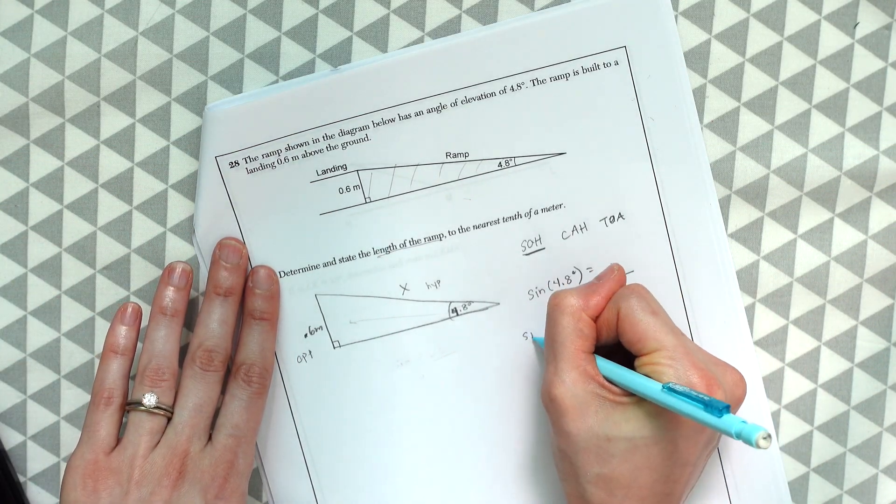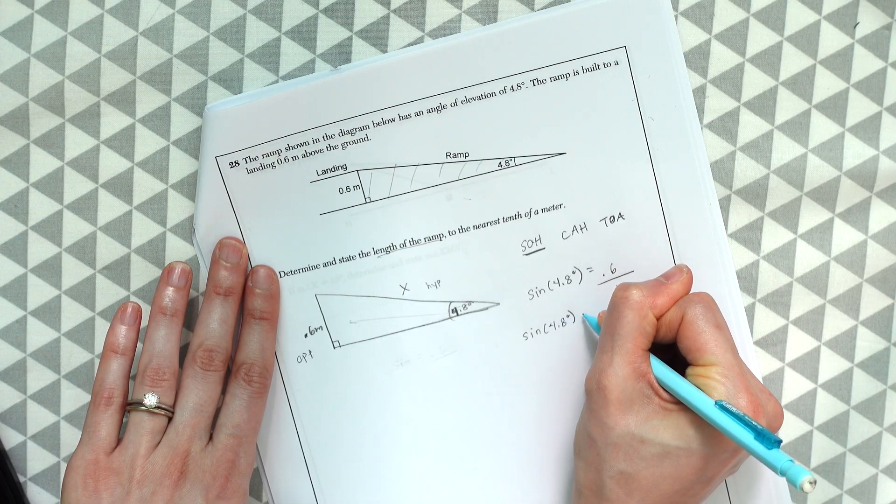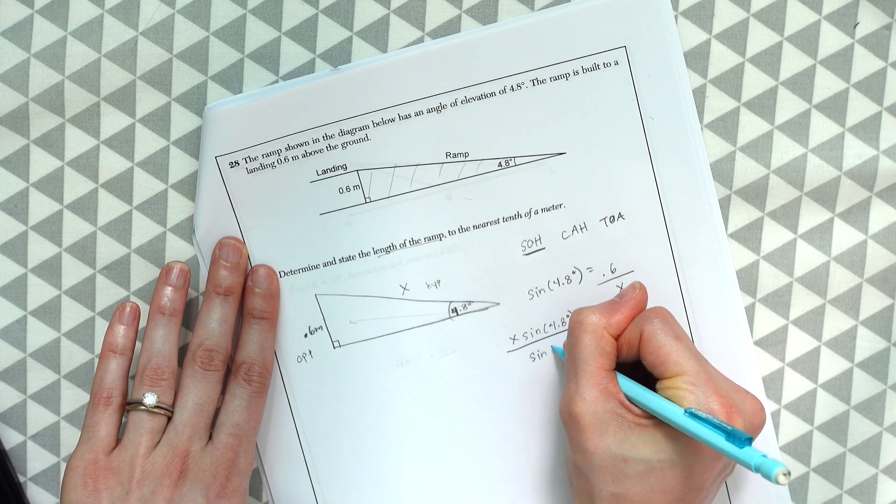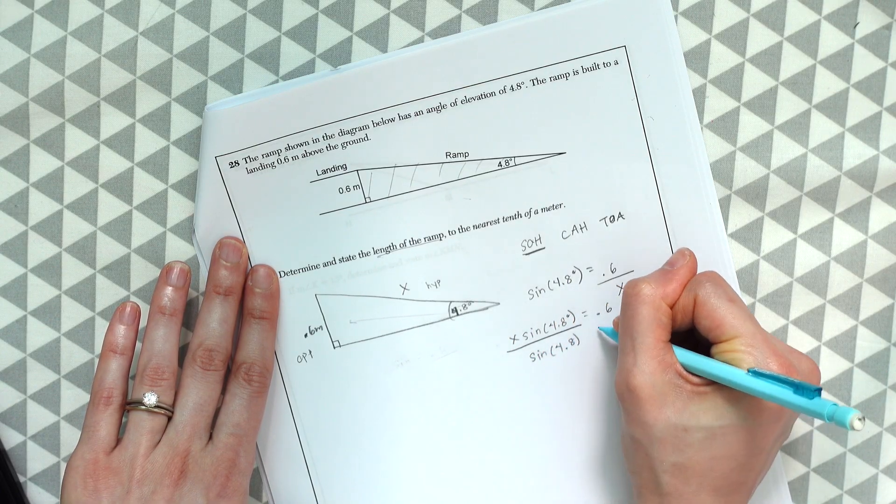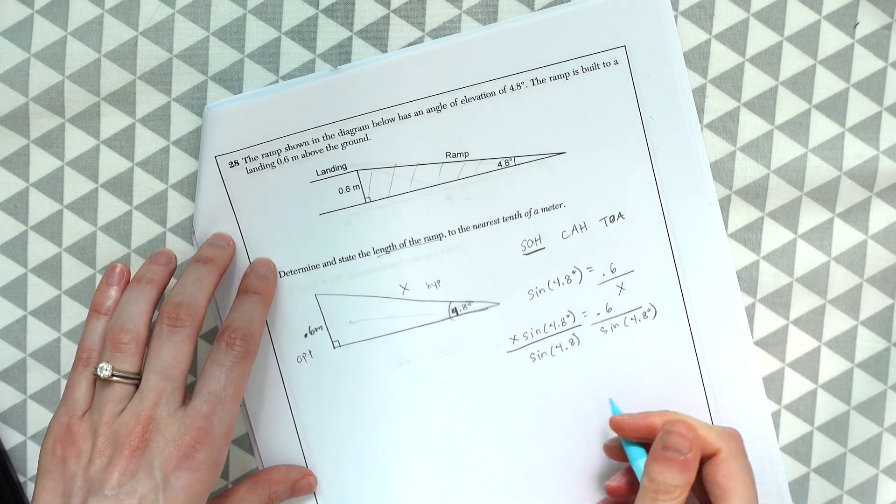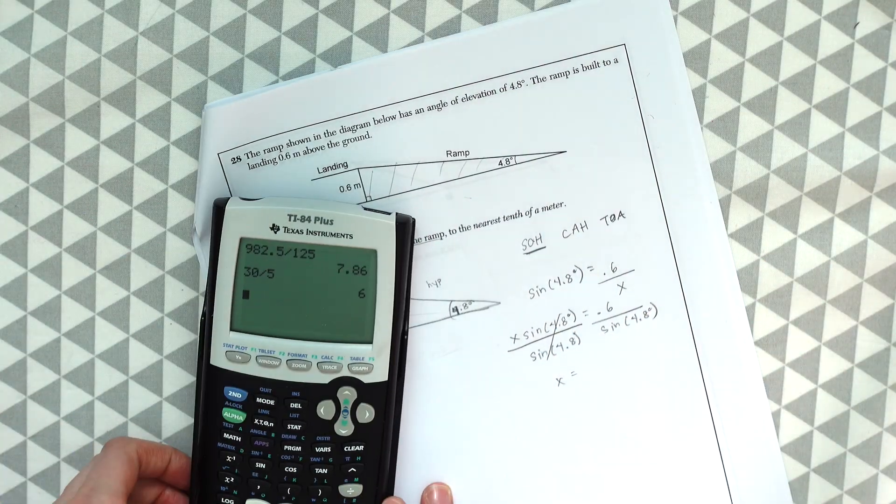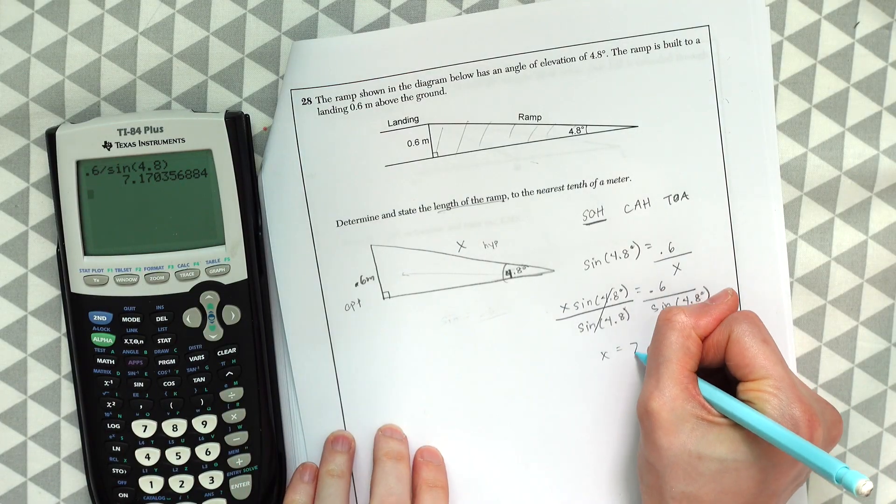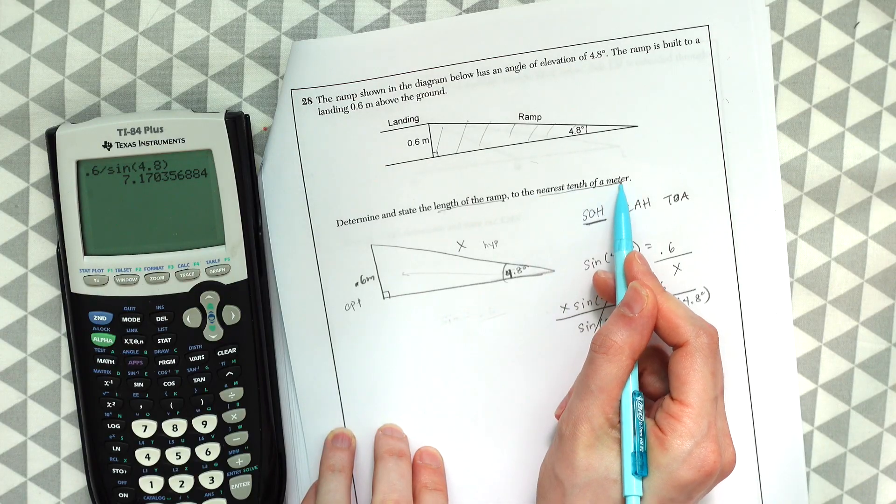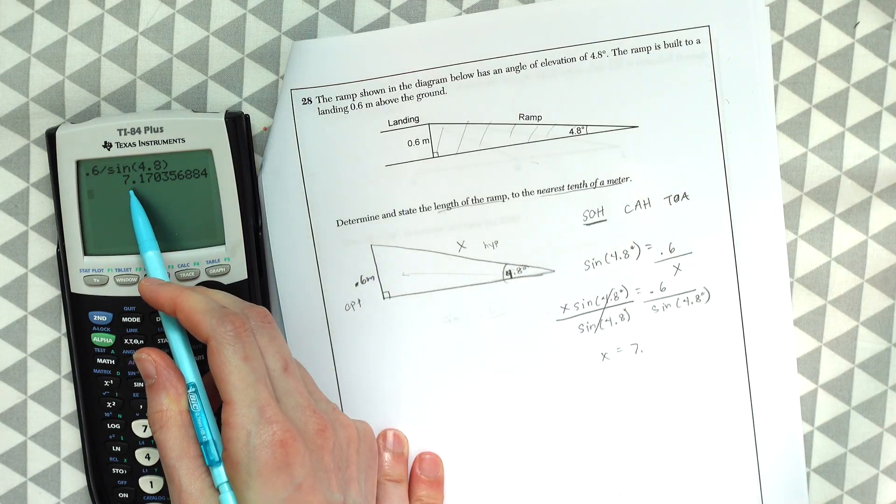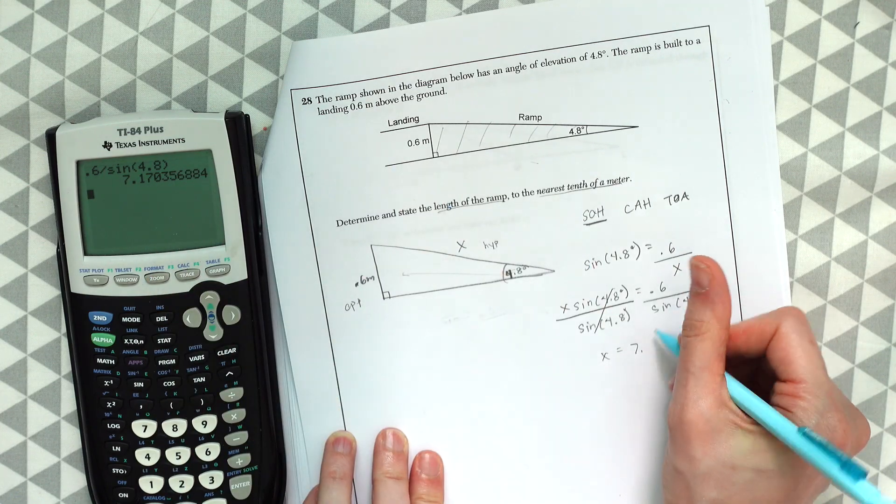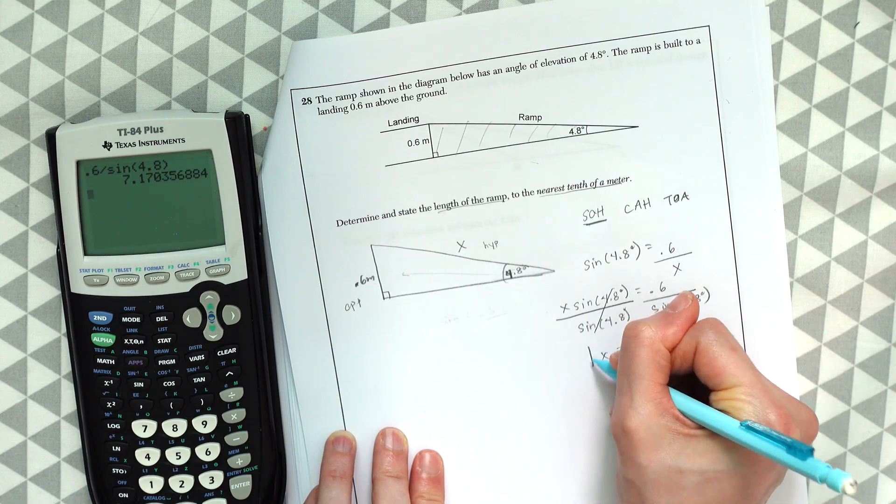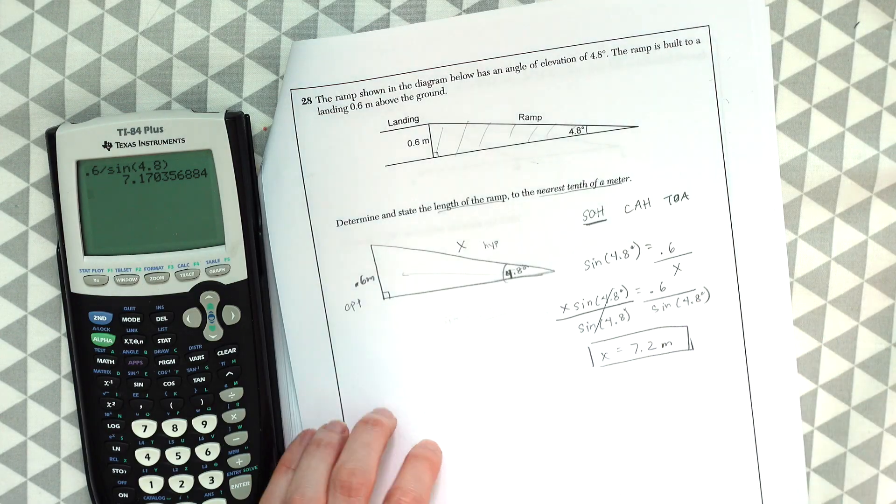And then we could just use some algebra here. So we could cross multiply. We get sine of 4.8 degrees times x is equal to 0.6 and then divide this on both sides and we get 7. And then look back, we wanted this to the nearest tenth of a meter. So we're just going to round up 7.17 will become 7.2. That is the length, 7.2 meters.